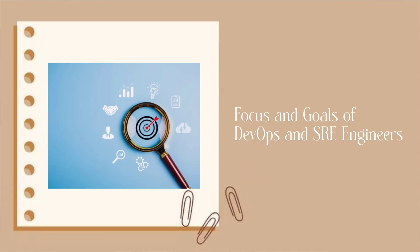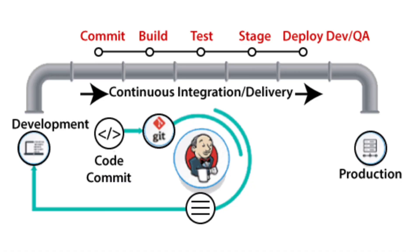So what exactly do DevOps and SRE engineers focus on? Let's break that down. DevOps engineers are focused on creating a seamless and efficient pipeline for software development and deployment. Their primary goal is to accelerate the software delivery process while maintaining high quality. They work closely with developers to automate tasks, manage infrastructure as code, and ensure that everything runs smoothly from development to production.